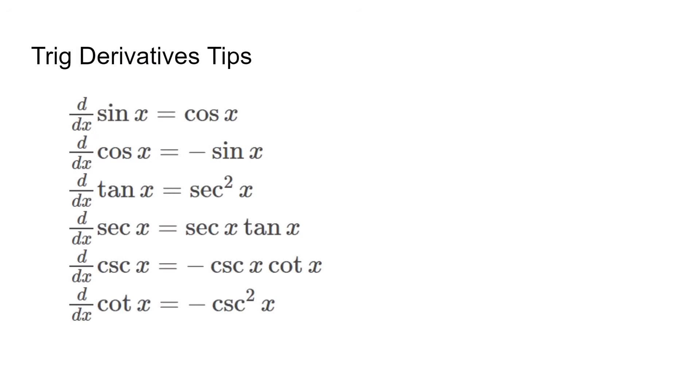The trig differentiation rules are also pretty simple, but require a bit of memorization at the beginning. A few noticeable patterns helped me learn them quickly. First, the derivative of sine and cosine are each other. The tan, cotangent, secant, and cosecant derivatives are all very similar, and the tan ones are secant squared, and the secant ones are secant x tan x.